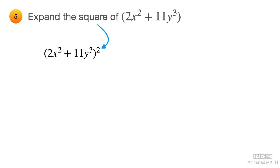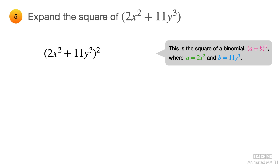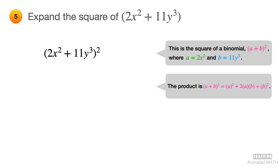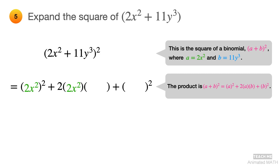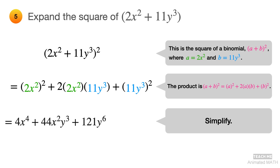First, square the binomial. Then use the perfect square add times add pattern, which is (a + b)², but with a equal to 2x² and b equal to 11y³. Its product is a² + 2ab + b². Substitute 2x² for all a's and 11y³ for all b's, then simplify the expression. The final answer is 4x⁴ + 44x²y³ + 121y⁶.